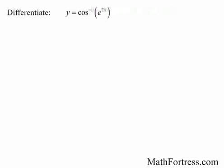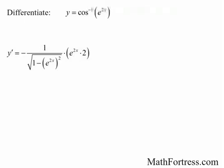Differentiate the expression cosine inverse of e raised to the power of 2x. Once again, this is a perfect candidate for the chain rule. The outer function is cosine inverse and the inner function is e raised to the power of 2x. Applying the chain rule, the derivative is equal to negative 1 over the square root of 1 minus e to the 2x squared, times e to the 2x times 2. Simplifying, the final derivative is equal to negative 2 times e to the 2x over the square root of 1 minus e to the power of 4x.